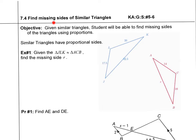7.4: Find missing sides of similar triangles. Given similar triangles, students will be able to find missing sides of the triangles using proportions, because similar triangles have proportional sides. Here we have two triangles that are similar.